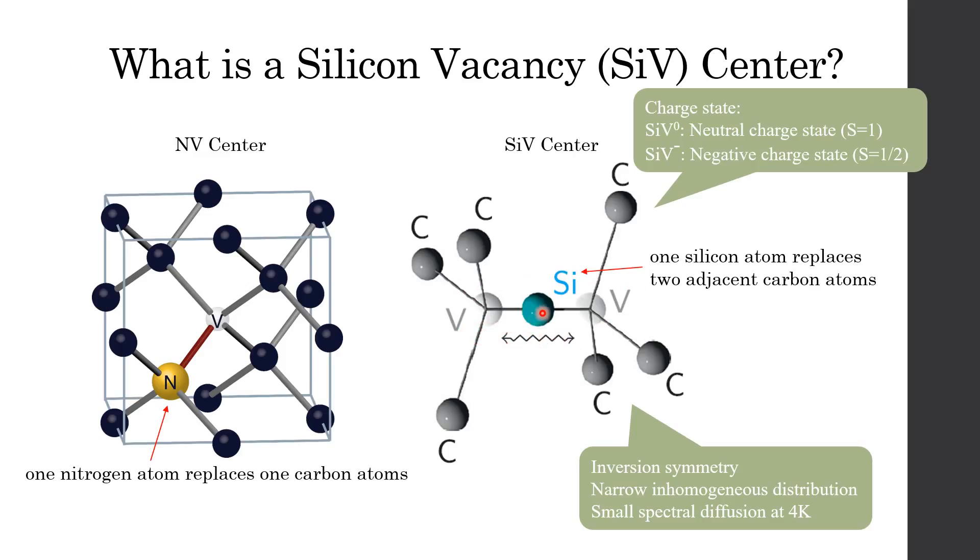As you can see, the silicon atom is able to oscillate along one-one-one symmetry axis. Just like other color centers, SiV center also has two charge states: neutral charge state (S0) and negative charge state (S-1). Here we just focus on negative charge state because it is regarded as the most promising color center in quantum computing. In addition, it is known that silicon vacancy center has inversion symmetry, so it has narrow inhomogeneous distribution and small spectral diffusion at 4K.